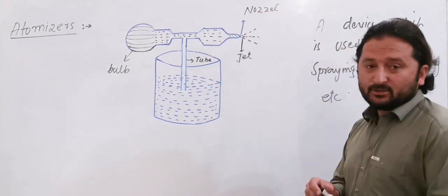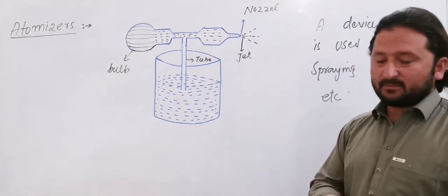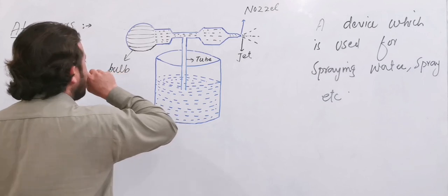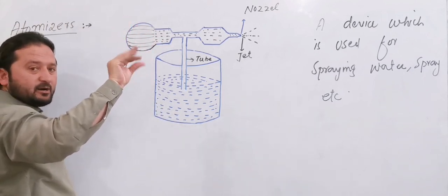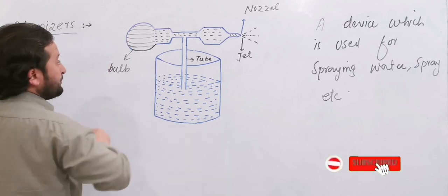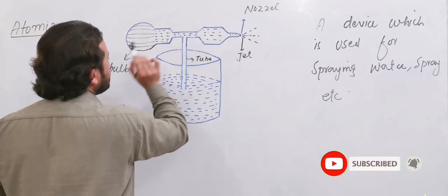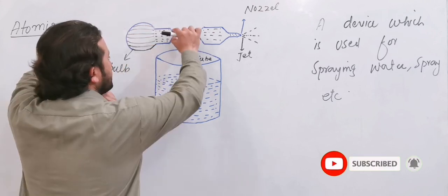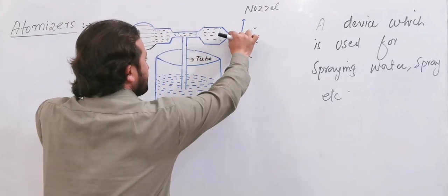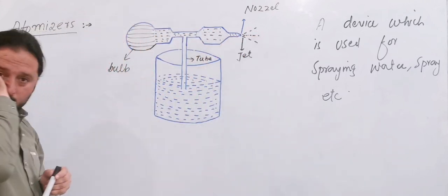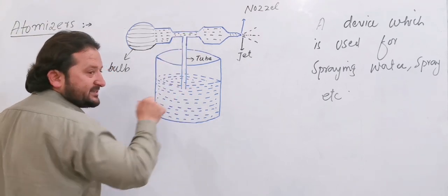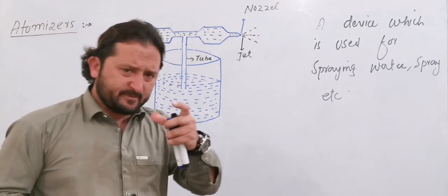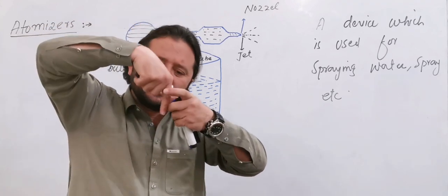Spray, we are using the diagram. Atomizer. Create a cross section area. In the tube, spray. It's like a pipe that is used to be a fluid.